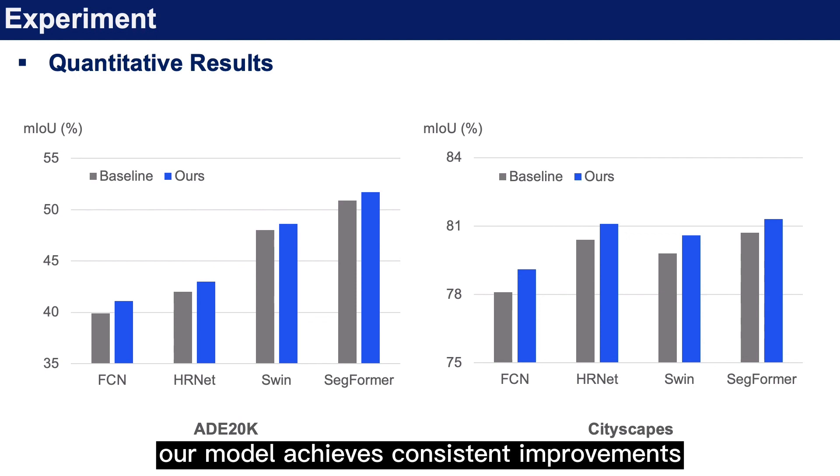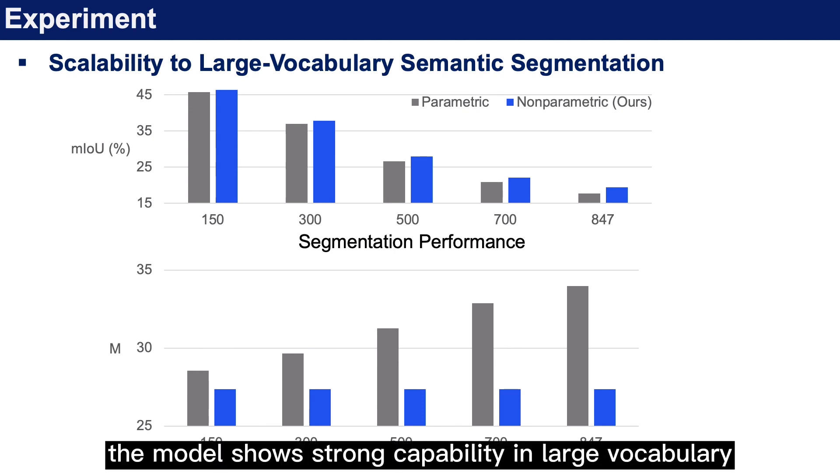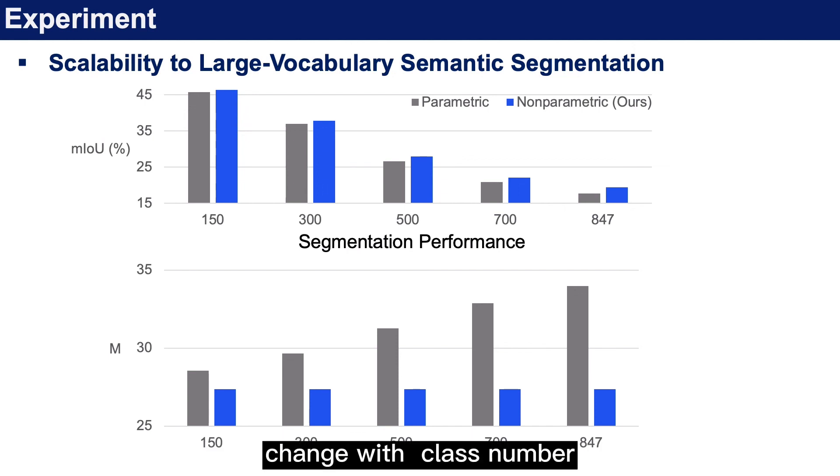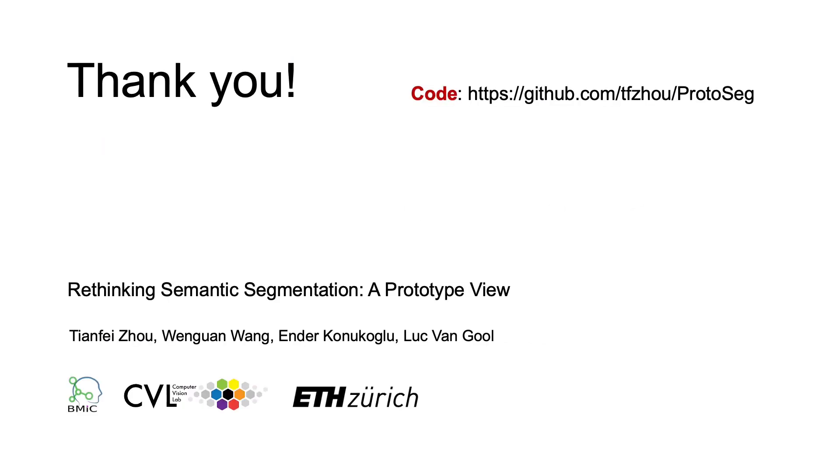Our model achieves consistent improvements against baseline models on ADE20K and Cityscapes. The model shows strong capability in large vocabulary semantic segmentation, and the number of model parameters doesn't change with the class number. Our code is available on GitHub. Thanks for watching.